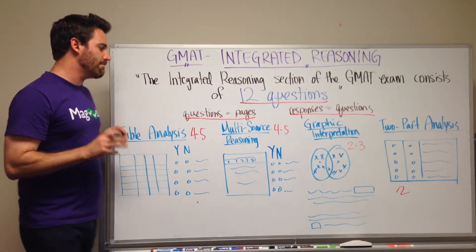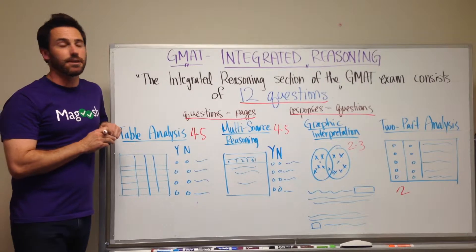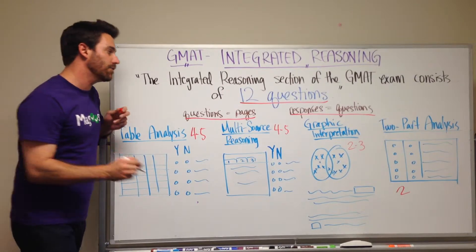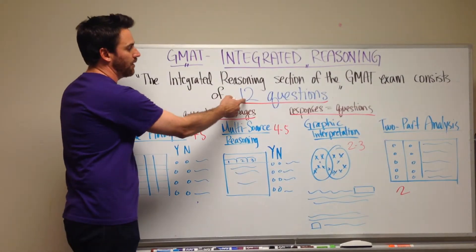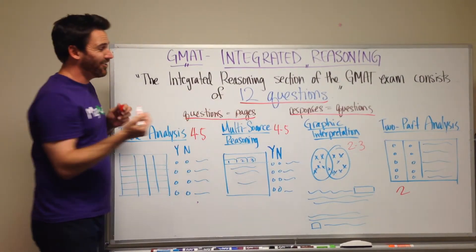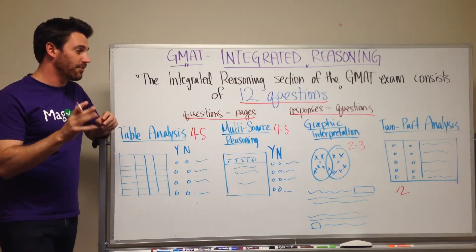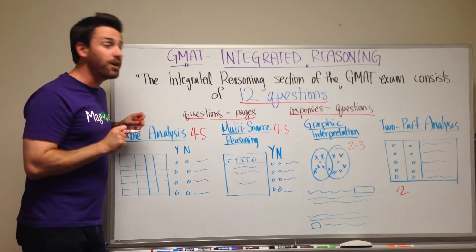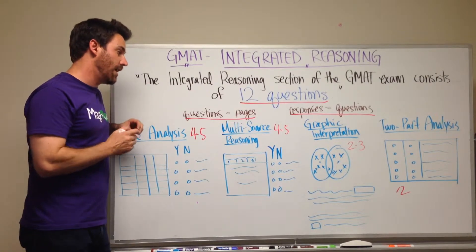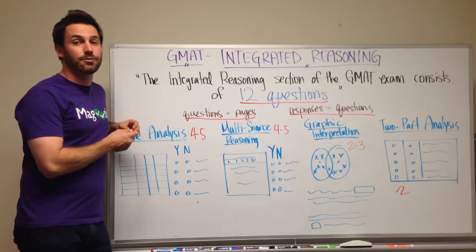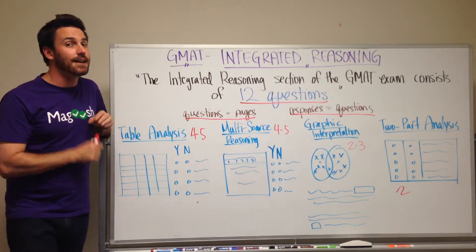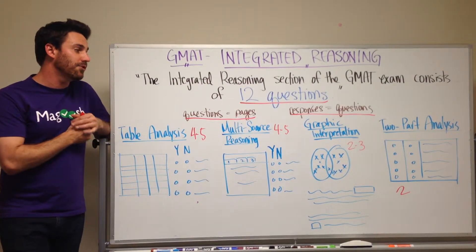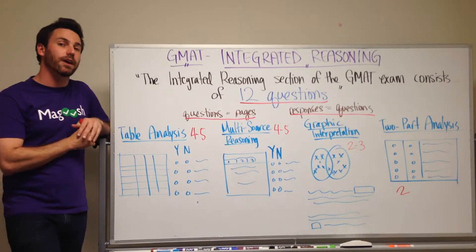So actually in the 30 minutes that you're given for integrated reasoning, you're not going to have just 12 questions. You're going to end up having somewhere around 30 to 40 questions that you have to do in 30 minutes — so that's not a lot of time and you have to move pretty quick.